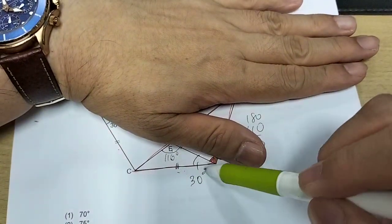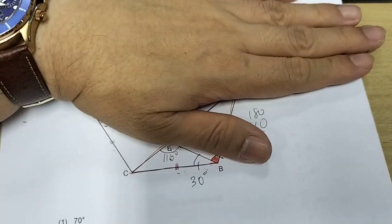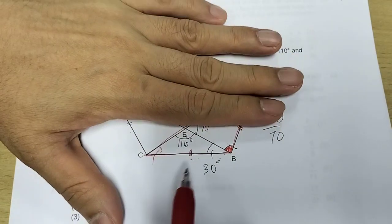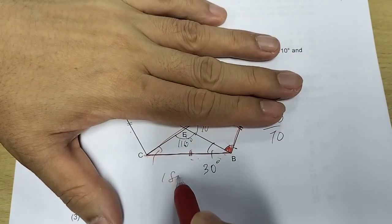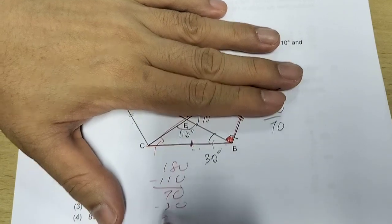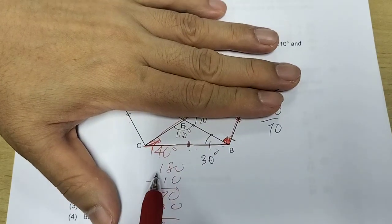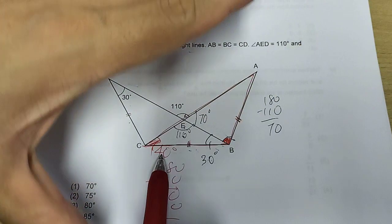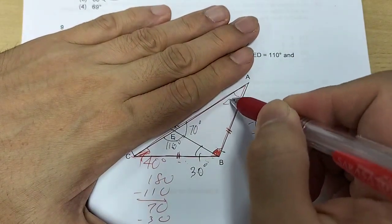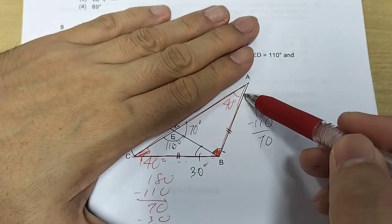Now, because I now know these two angles, I can find out what is this. I use sum of the angles in the triangle. So 180 minus 110 minus 35. I know this angle is 40 degrees. Now, why do I want this angle? Because if this is 40, I know this angle is also 40. Remember, this is an isosceles triangle.